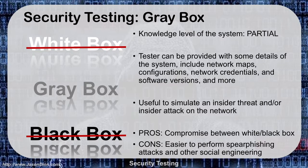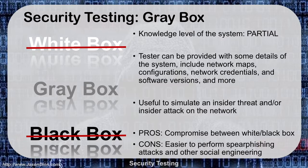Gray box is kind of halfway between black and white — that's why it's gray. It's a partial system knowledge model. You might be given some details like network maps or configurations, maybe user credentials but not admin credentials, or you might be told the organization is using Windows but not what version. It's useful to simulate something like an insider threat. For example, an administrative assistant who is about to be fired might try to cause damage using her normal user account — that's the kind of scenario gray box simulates.